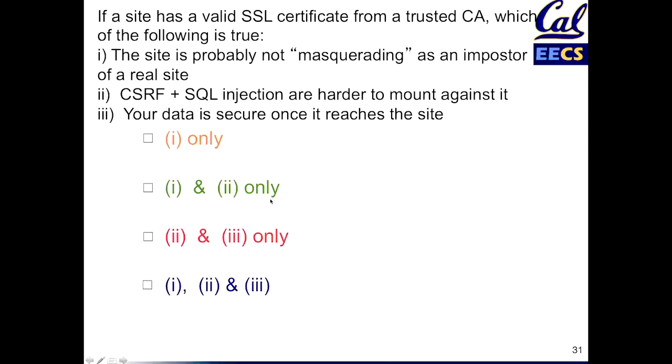Question about SSL: if a site has a valid cert from a trusted CA — and why do I say a trusted certificate authority? Because there are numerous examples of a certificate authority having their private keys compromised, which means an attacker can pretend to sign certificates that look perfectly valid but are fake. This actually happened to the CIA and Mossad a few years ago — it was extremely embarrassing and that certificate authority is now out of business. But assuming it's a good certificate authority that hasn't had this problem, which can you assume is true if the site has a valid SSL cert? That it's not masquerading as an imposter, that attacks like CSRF and SQL injection will be more difficult to mount, or that your data is secure once it reaches the site? Which combination of these can be assumed to apply?